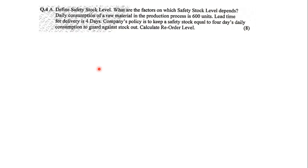Let us take the next question. It is given: Define Safety Stock Level and what are the factors on which Safety Stock Level depends. Then the problem states: the daily consumption of a raw material in the production process is 600 units. The Lead Time for delivery is 4 days. The company's policy is to keep a Safety Stock equal to 4 days of daily consumption to guard against stockout. Calculate the Reorder Level.